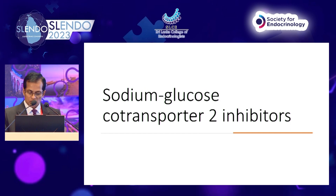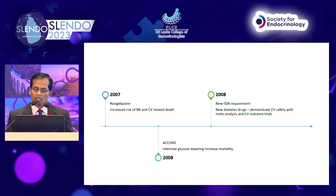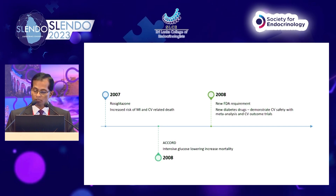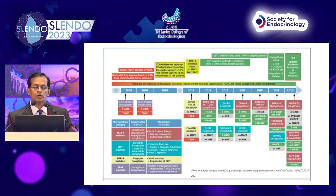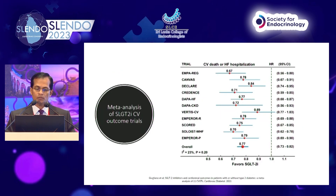A few words about SGLT2 inhibitors. After the ACOS study in 2008, new FDA requirements came into practice: all diabetes medications should go through cardiovascular outcome trials before getting FDA approval. After that we had so many cardiovascular outcome studies because all the drugs had to go through this process.